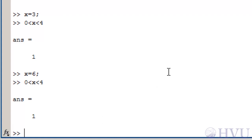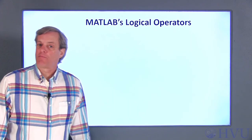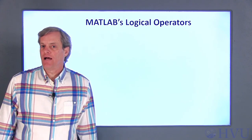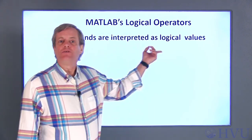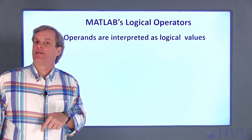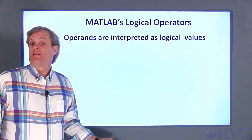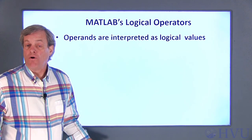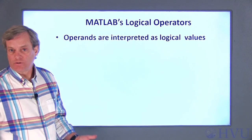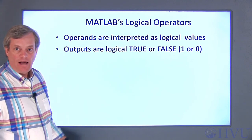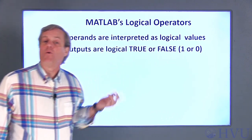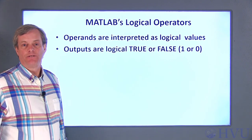So, to check whether a particular value lies within an interval, we need to use a logical operator in conjunction with the relational operators. For logical operators, both the operands and the result are logical values. You can still use any number as an operand, but MATLAB will interpret these values as logical values — operands that are not zero are interpreted as true, while operands that are zero are interpreted as false. As with the relational operators, the logical operators return either a 1 or a 0: 1 if the result is true, and 0 if the result is false.